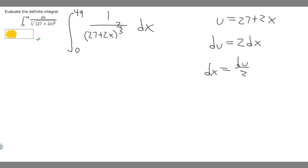So now what we want to do is rewrite our integral. We have 0 to 49, and then 1 over, and then we replace our 27 plus 2x with u, because that's what we set u equal to, raised to the 2/3. We can replace 1 over u to the 2/3, which is the same thing as u to the minus 2/3. If you have 1 over u to a variable, you can just make it the negative of that.